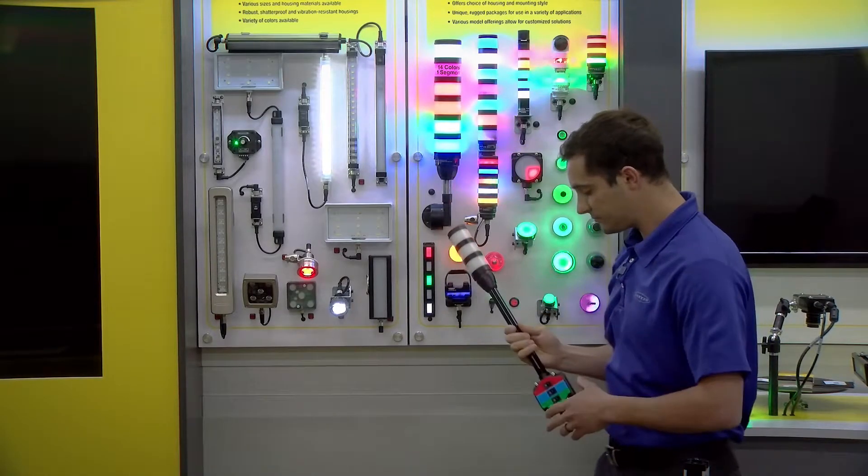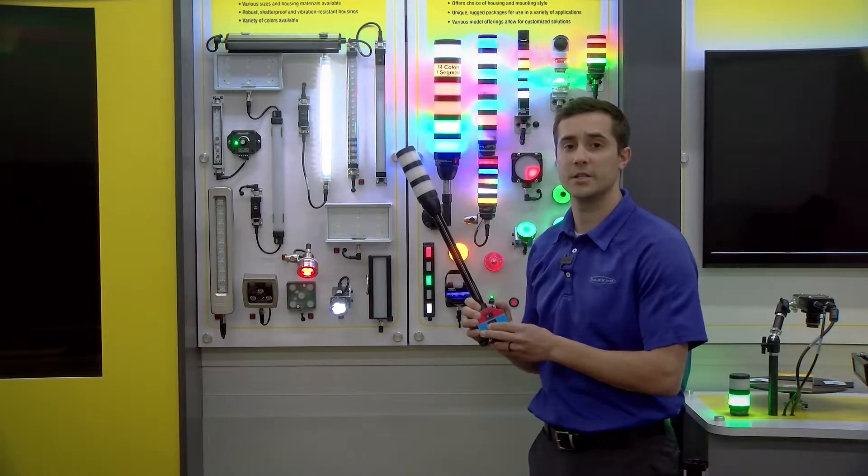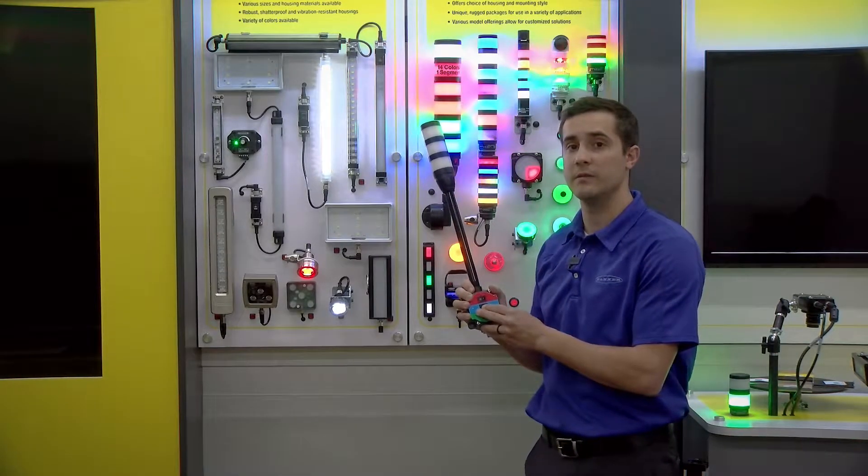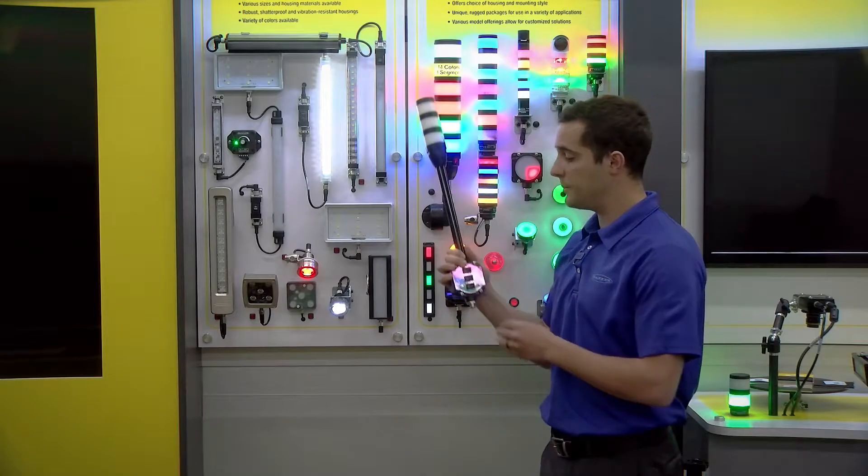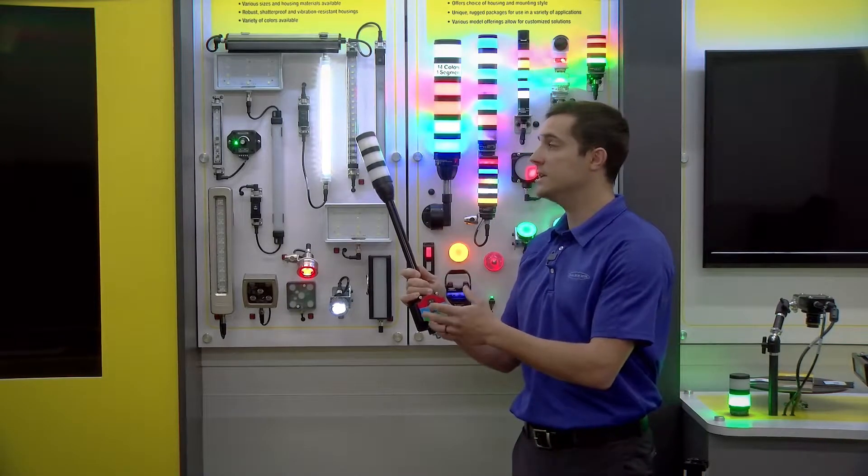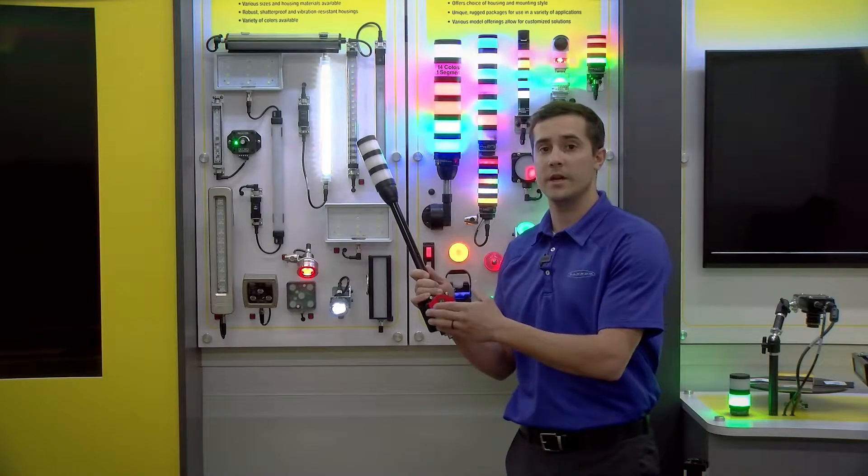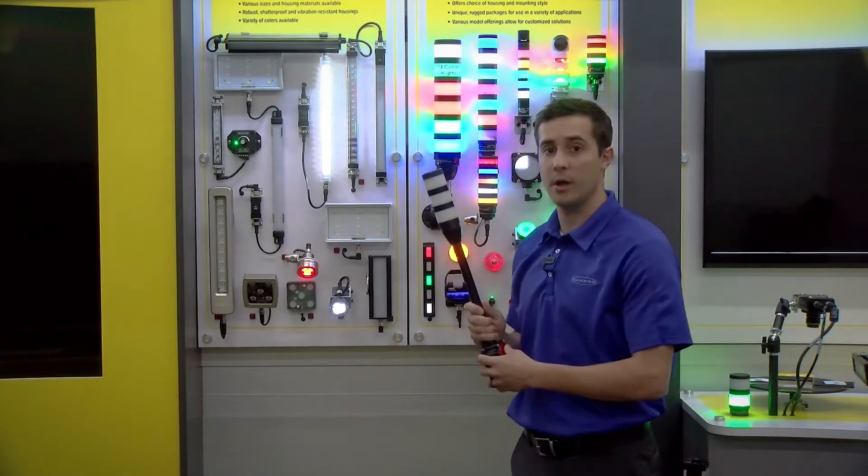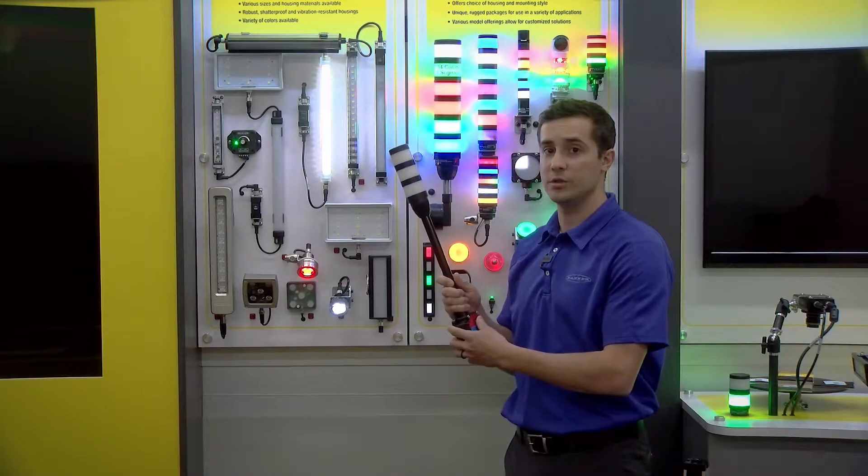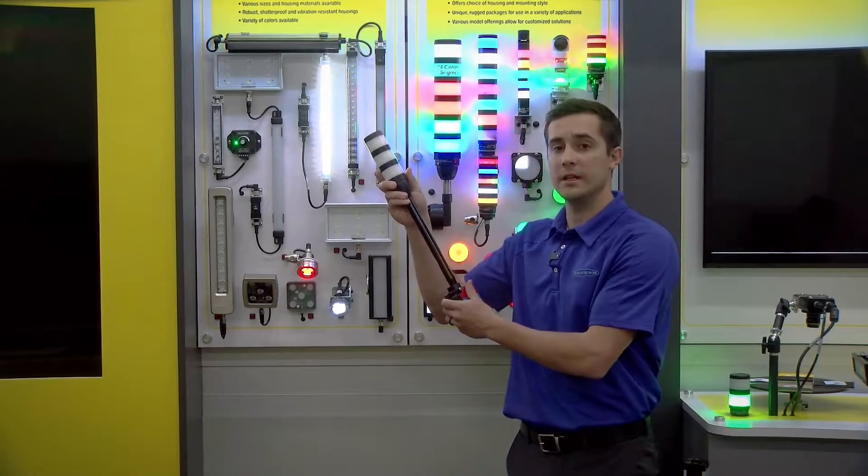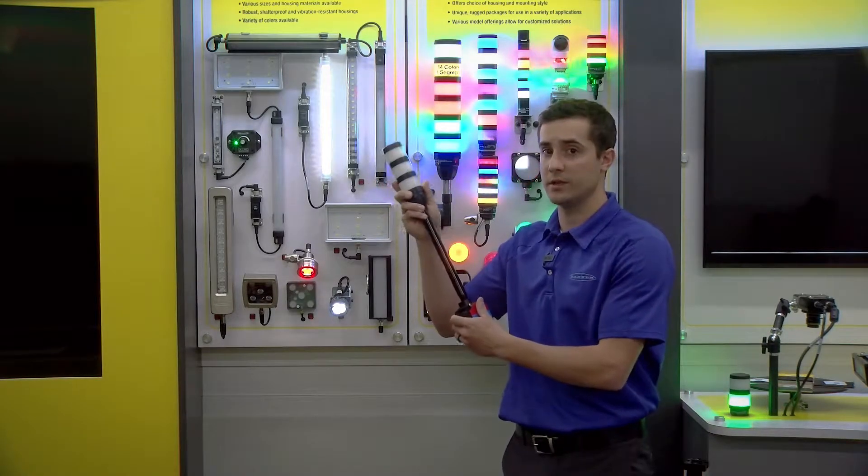In the same way, many material handling customers have found what are called and-on tower lights to be very effective in their processes. This is a plug-and-play solution that lets customers implement easy operator or supervisor status with quick mounting and integral switches. It allows you to give an operator the opportunity to very immediately indicate status at a workstation for instance.